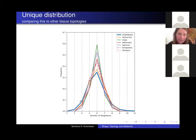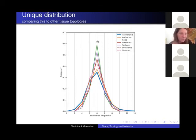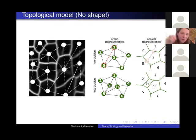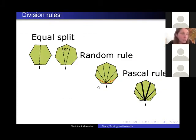We wondered why Arabidopsis topology is different from other species, so we made a topological model taking into account only the graph representation of cells. Cells are nodes with their neighbors as edges. Each time you divide a cell you create another node - the new cell - and new edges. The question is: what are the rules of division? We don't have shape here, just topology. We can talk about cells wanting to divide in such a way that after the division, the mother and daughter cell will have certain neighbor numbers.